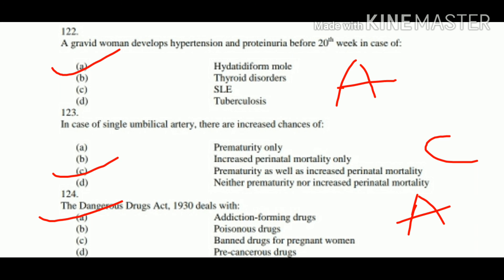Question number 124: The Dangerous Drug Act 1930 deals with: A. Addiction-forming drugs, B. Poisonous drugs, C. Banned drugs for pregnant women, D. Precancerous drugs. The right answer is Option A — Addiction-forming drugs.